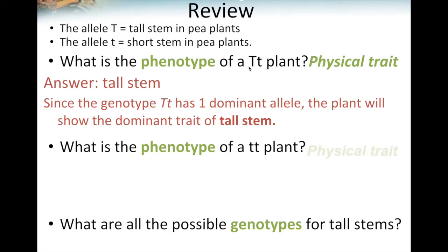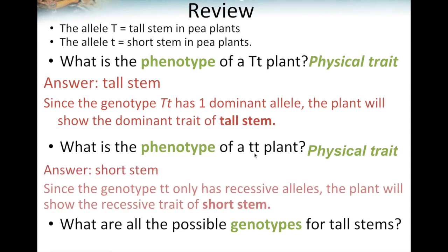The second question also asks for the physical trait of a plant, but this plant is homozygous recessive. It's homozygous because both alleles are the same, and recessive because they're both lowercase. So it's going to be short stem, because it only has the lowercase alleles to represent the recessive trait for short stem.